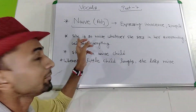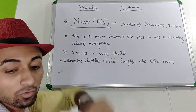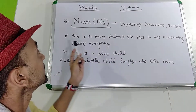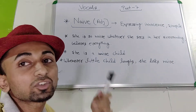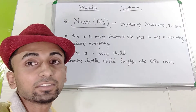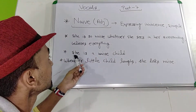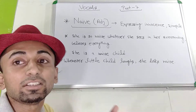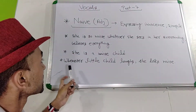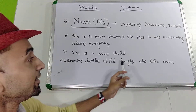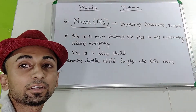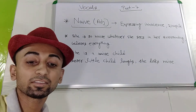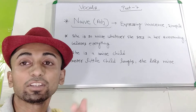Let me take some examples. First: 'She is so naive' — meaning she believes everything she sees in her surroundings, so she is innocent. Another example: 'She is a naive child' — meaning she is an innocent girl. Whenever a little child smiles, she looks naive, meaning she looks innocent.